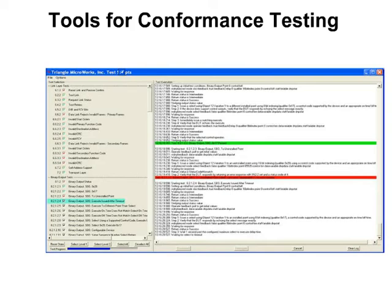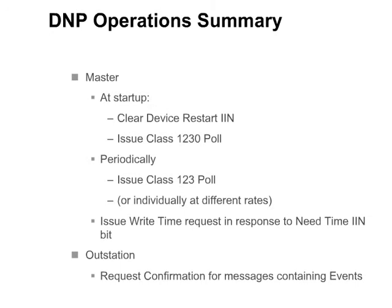The test results are color-coded in both columns to highlight tests that have passed or failed. This slide provides a summary of normal D&P operations. On startup, the master clears the device restart IIN indication in the outstation and issues a Class 1230 poll. This poll will retrieve all buffered events and the current static data in order to initialize the master's database.